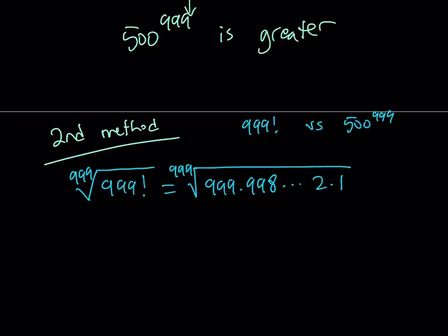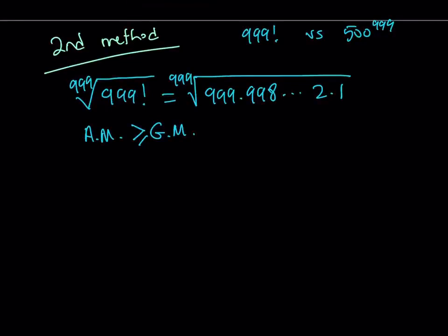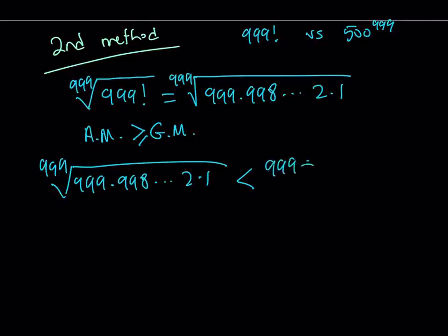At this point, I'm going to use the AM-GM inequality. What does AM-GM inequality tell me? It tells me that the arithmetic mean of a bunch of numbers is always greater or equal to their geometric mean, and equality is attained when all the numbers are equal. In this case, they're different, so it's a strict inequality. The 999th root of this product, the geometric mean of all these 999 numbers, is going to be less than their arithmetic mean, which is their sum divided by the number of numbers, which is 999.